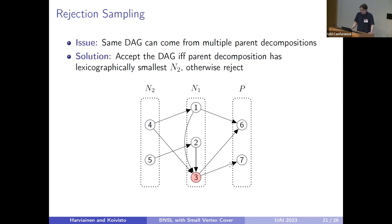This is fixed by using rejection sampling. We have chosen in our paper, this acceptance criteria that we accept the DAG if and only if its parent decomposition has the lexicographically smallest set N2, which is testable in polynomial time in N, given that the value of k is fixed. Actually the exponent of N doesn't depend on this k in this verification step. Otherwise we reject the sample.